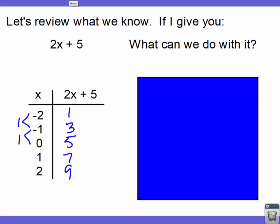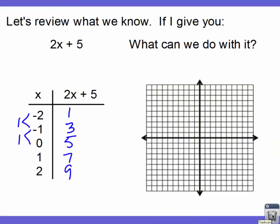Another thing I can create from that expression, once I have the t-chart, is a graph — because each t-chart combination is an x-y coordinate. So negative two, one says: from the origin go left two, up one, and put a dot. The next one: left one, up three. The next: up five right on the axis. Then right one, up seven.